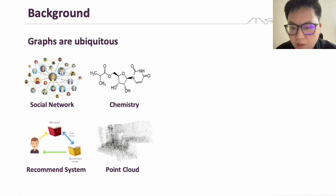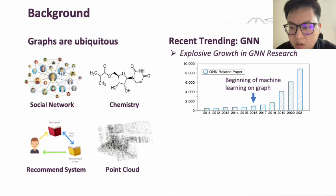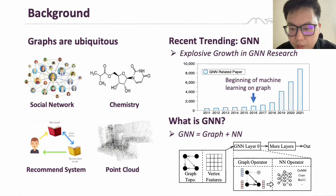One important trend in graph algorithms is graph neural networks. The explosive growth of GNN-related papers in recent years, as seen in this histogram, illustrates their increasing popularity. GNNs combine graph and neural network computations, utilizing two types of operators: graph operators and neural network operators.